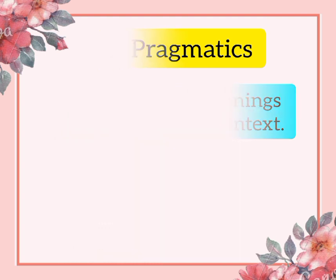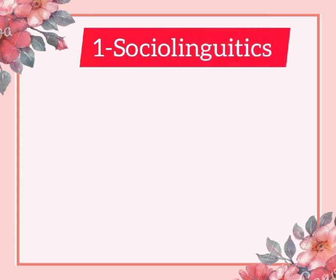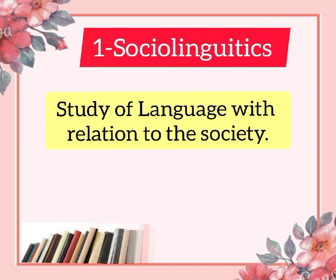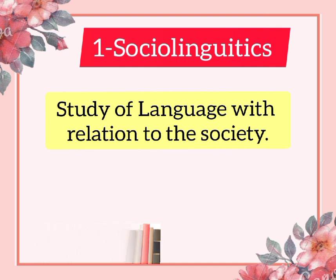Number one minor branch of linguistics is sociolinguistics. Sociolinguistics is the study of language, its variation and changes — how varieties of language are formed when speakers belong to different geographical regions, social situations, and occupations. The study of language with reference to society is also known as sociolinguistics. Language connects people in society; society determines the language of the individual, and language also varies from community to community.